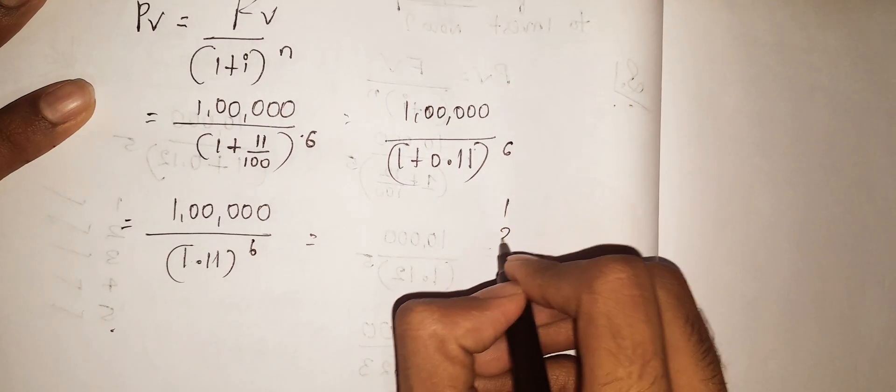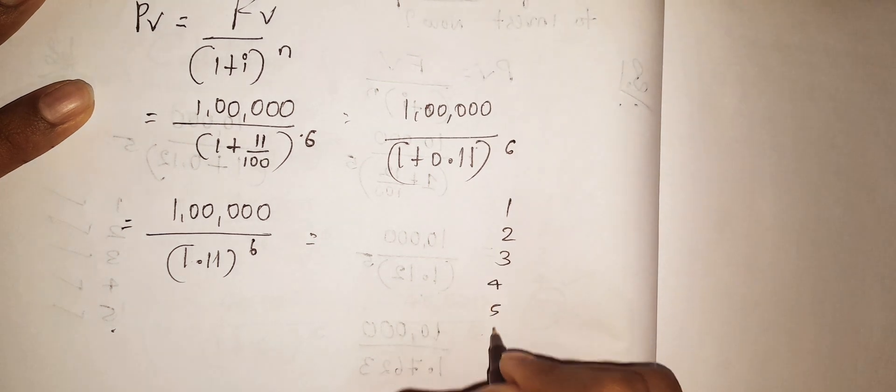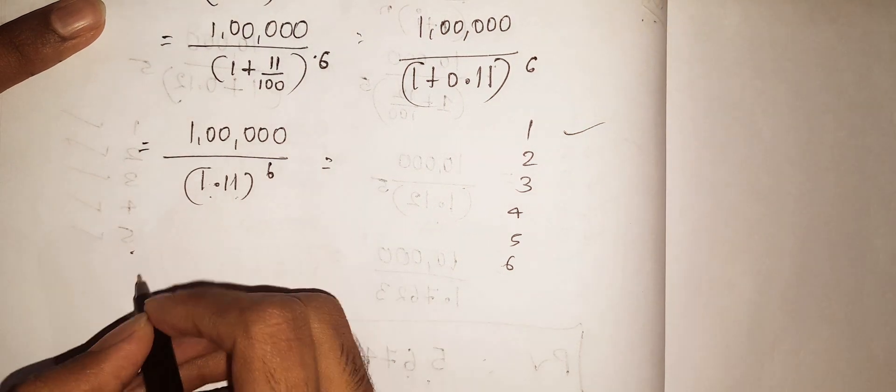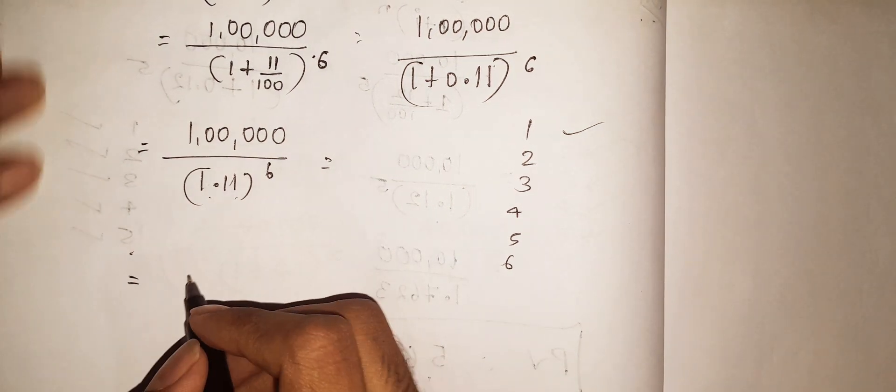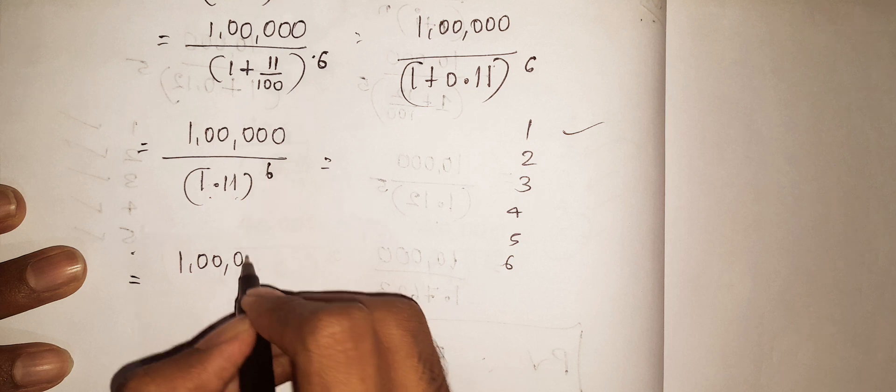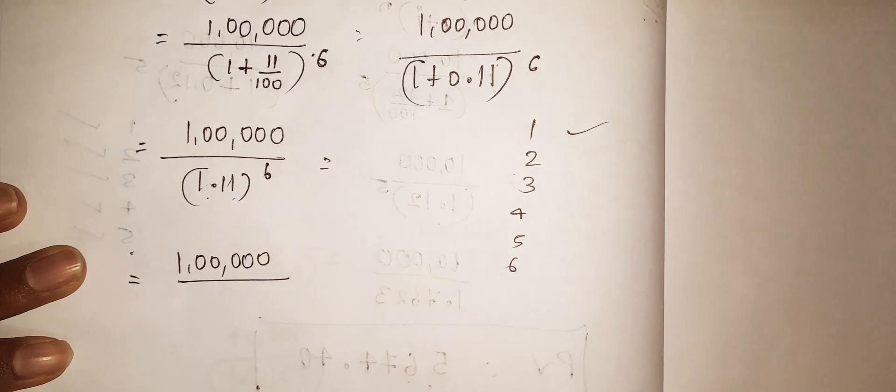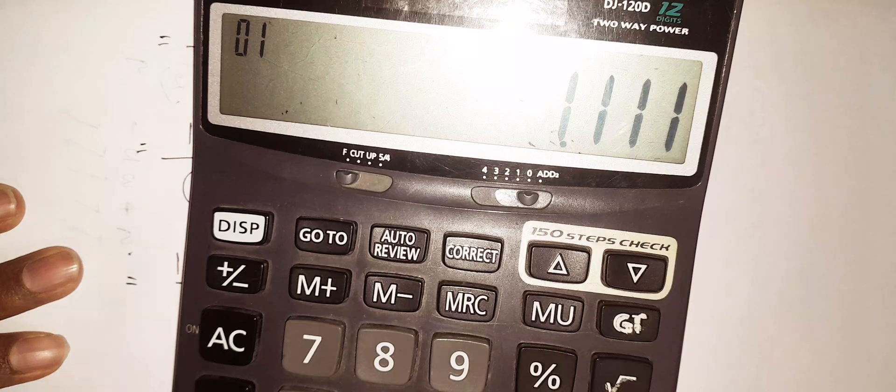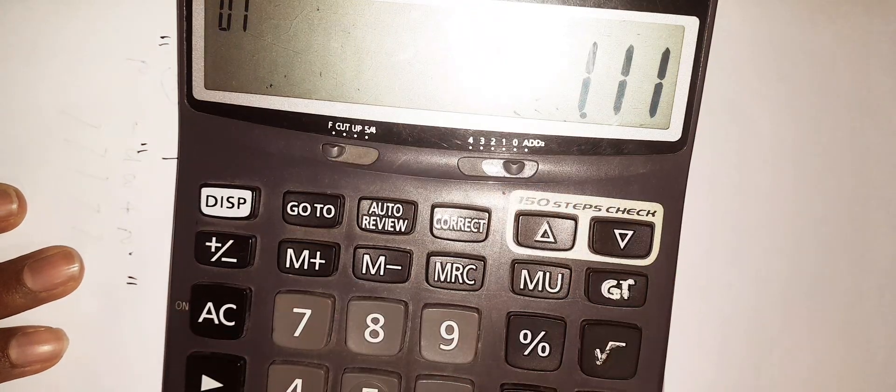So counting 1, 2, 3, 4, 5, 6 years. First year we have 1.11. This is second year. So 1 lakh divided by - second year is 1.11. So 1.11 is the first year.